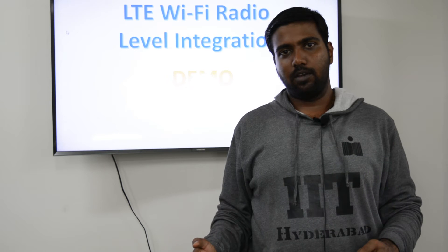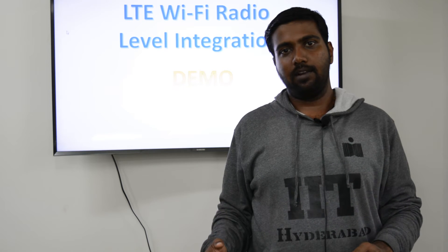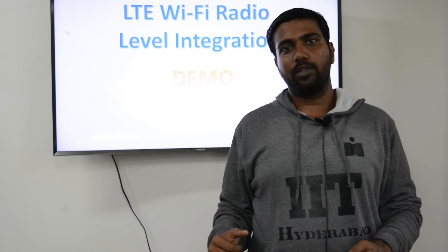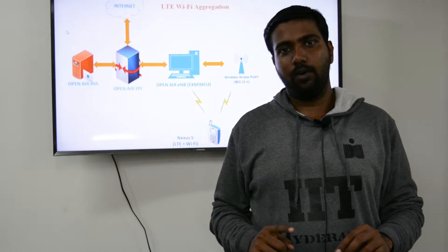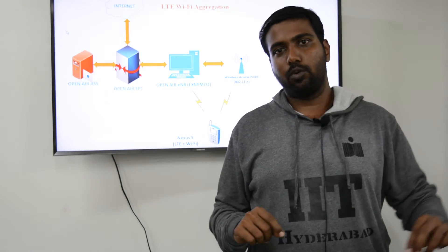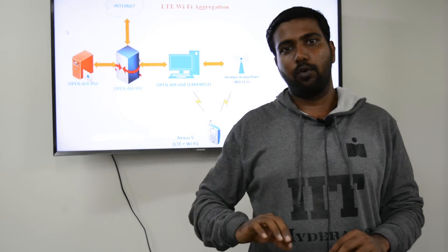This UE is downloading a file simultaneously through both LTE and Wi-Fi interfaces. It looks to the entire LTE network that there is one flow which is through the core network, but actually the flow gets split.